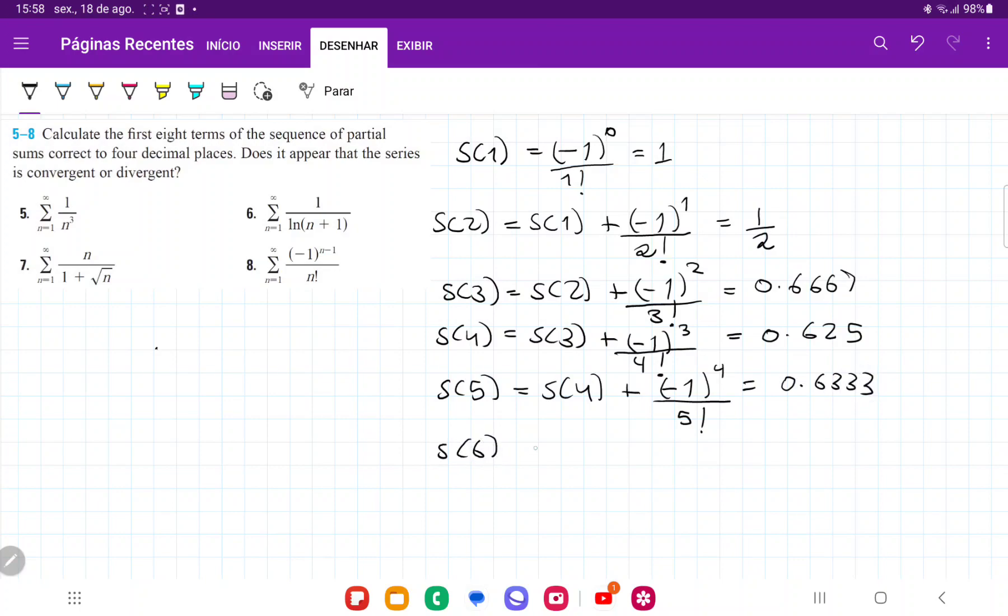S(6) is going to be the previous sum plus (-1) to the power of 5 over 6 factorial, which gives us 0.6319.